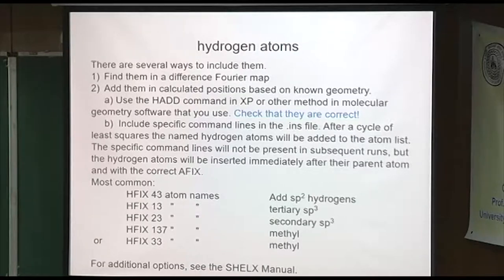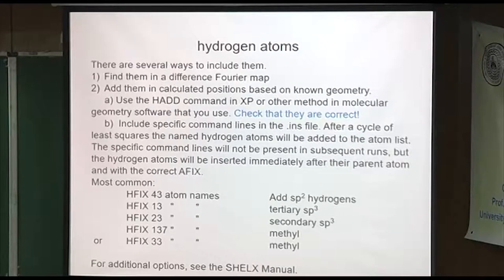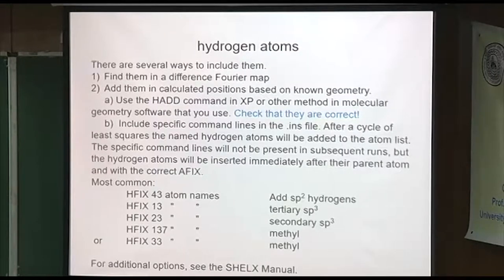There are many ways you could find hydrogen atoms. You could look for them in a difference map, but then you have to go to the trouble of naming them, sorting them, and putting them in where they go. Or you can do it automatically. In XP, there's an automatic method called H-add. It does a pretty good job, though sometimes it will make a mistake — like if your phenyl ring is a little disordered, it might add two hydrogens instead of one to a carbon. It often adds hydrogens to nitrogen atoms or oxygens that shouldn't be there. But it's a quick and dirty way of adding the hydrogens.